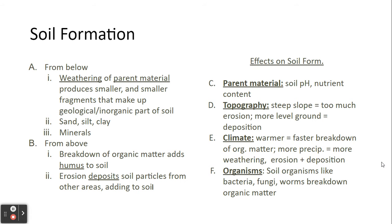Factors that play a role in soil formation: the type of parent material can actually influence the soil's pH and its nutrient content. The topography of the land — especially if it has a steep slope — can actually increase the amount of erosion, versus an area that is much more level where we can see a lot more deposition or formation of soil. Climate — a much warmer climate increases decomposition rates, so we tend to see a faster breakdown of organic matter. More precipitation equals more weathering and more erosion. And organisms — the more bacteria, fungi, or worms that you might have present, the better the breakdown of organic matter.